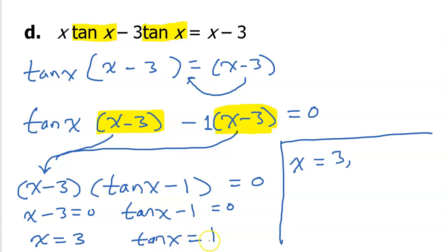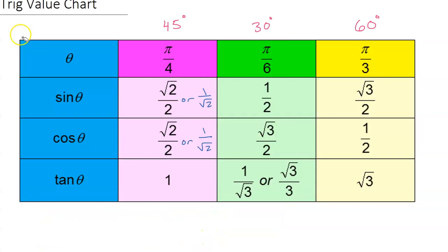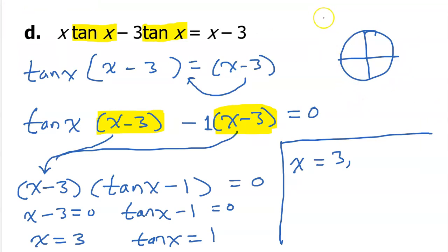But what additional solutions do I get from tangent x equals 1? Where does tangent equal 1? We know that tangent equals 1 at pi over 4. So that is the reference angle. Okay. So the reference angle is pi over 4. But there's one in every quadrant, my friends. Alright. All of these angles have a reference angle of pi over 4.